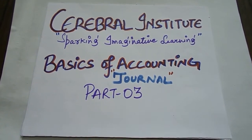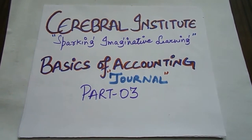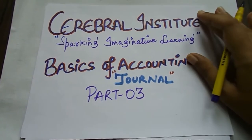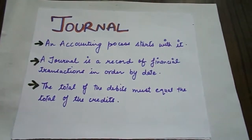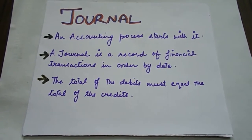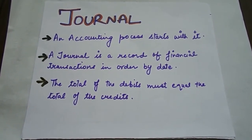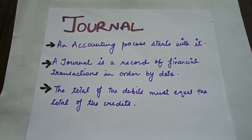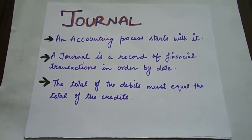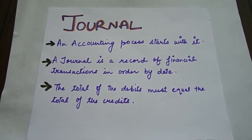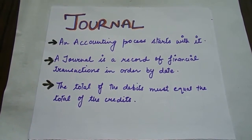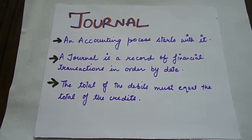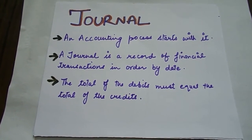Journal is the primary thing in our accounting system — that means our accounting process starts with the journal. All the transactions are first recorded in the journal specimen, after which we prepare other accounts like the ledger, cash book, BRS, and final statements. So the first and foremost step of the accounting process is the journal. A journal is a record of financial transactions in order by date.